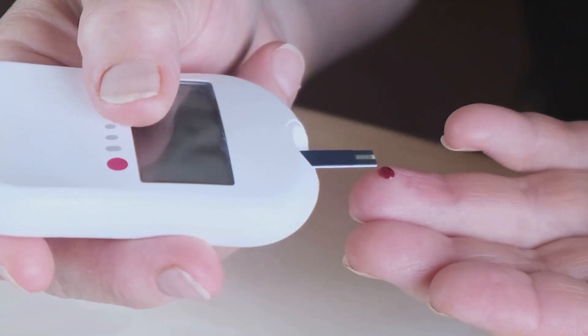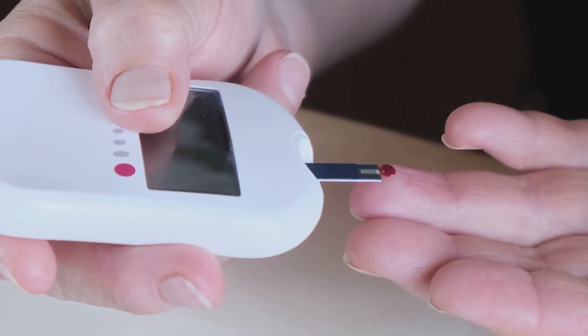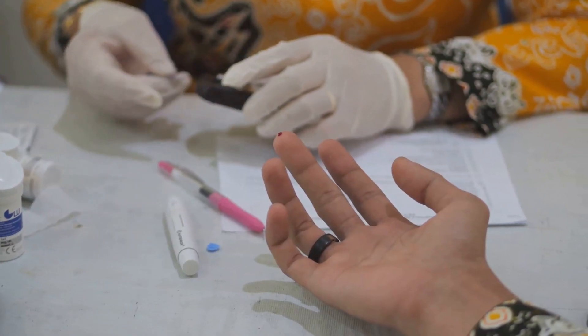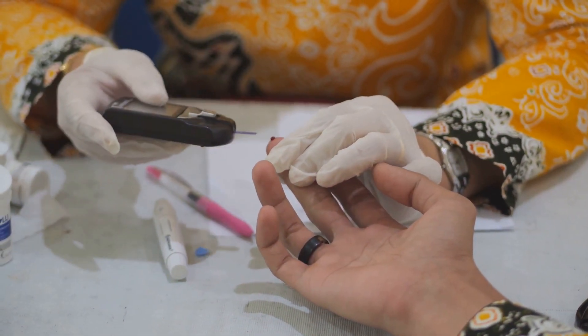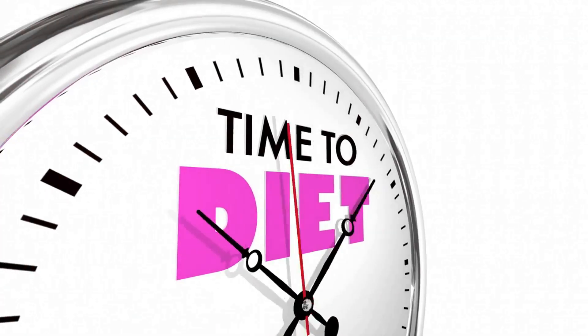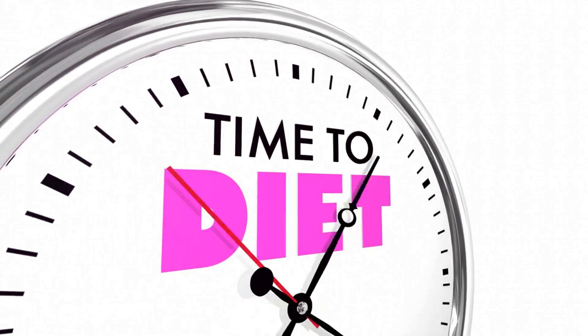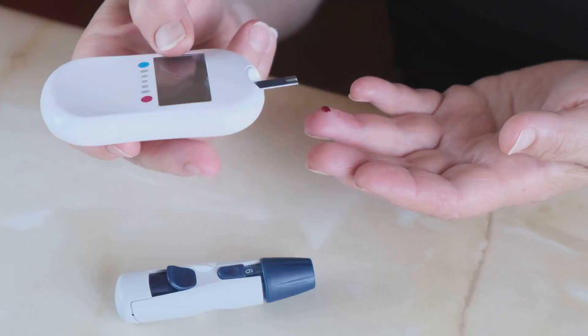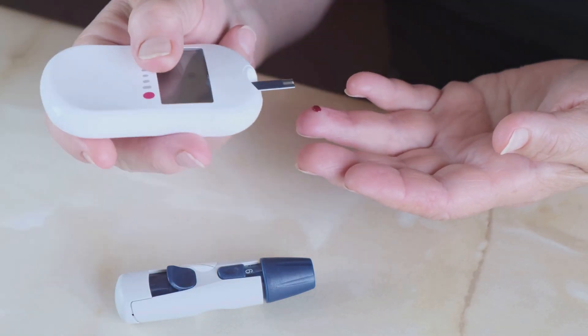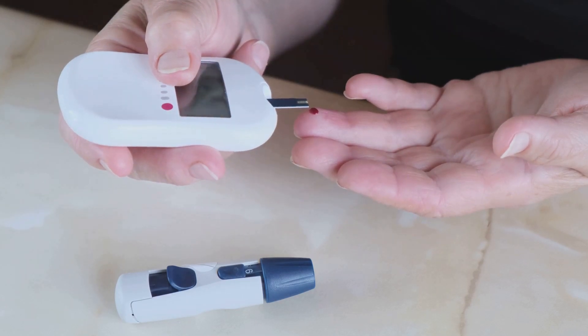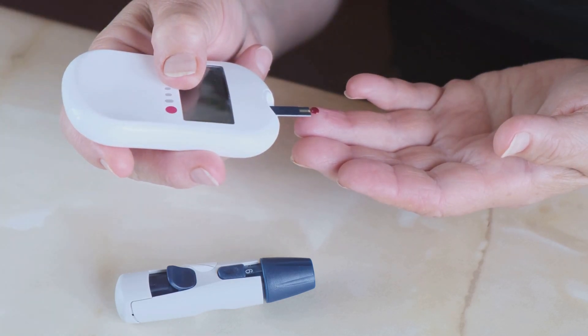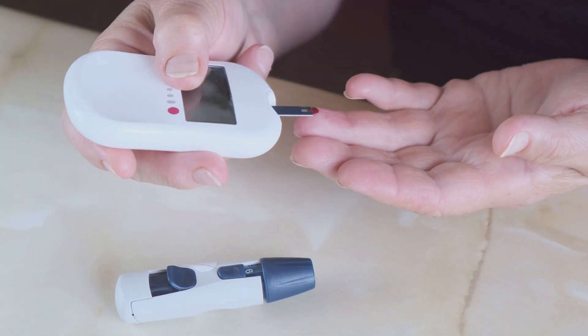The pros? It gives a long-term picture of blood sugar control. The cons? It requires a blood draw and doesn't show day-to-day fluctuations. Let's look at a practical example. Sarah started exercising more and reducing her carbohydrate intake. After six months, her A1c decreased from 6.2% to 5.7%, indicating improved insulin sensitivity. The hemoglobin A1c test provides a longer-term picture of your blood sugar control.